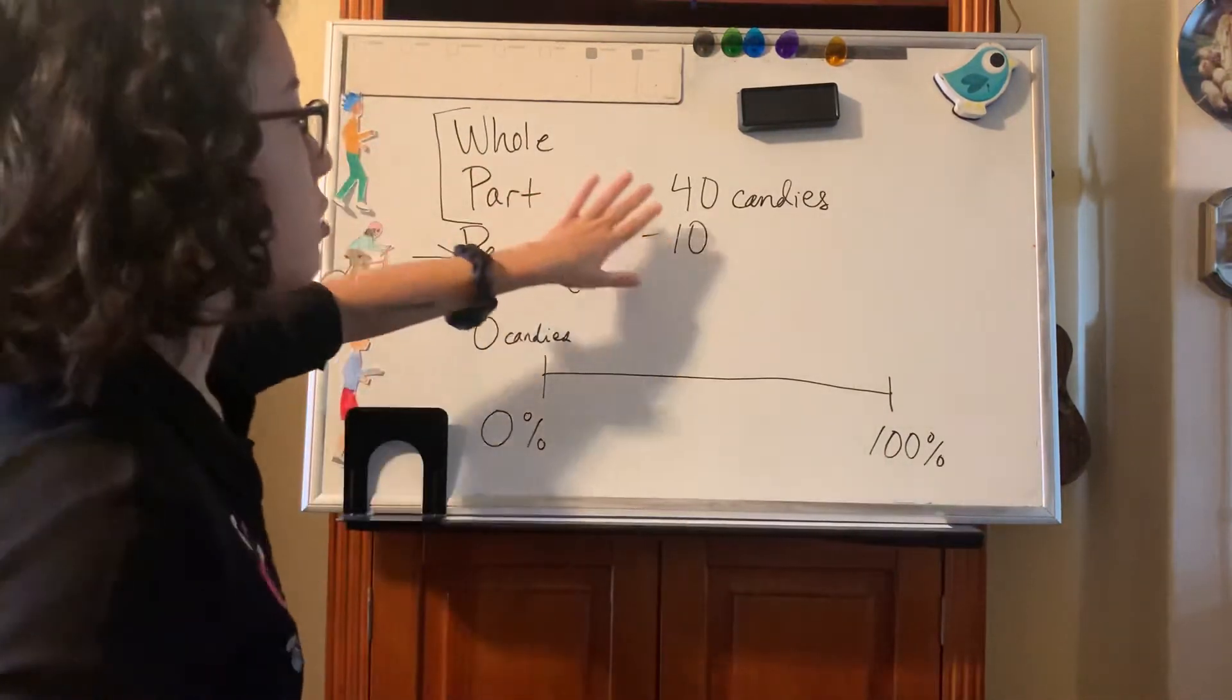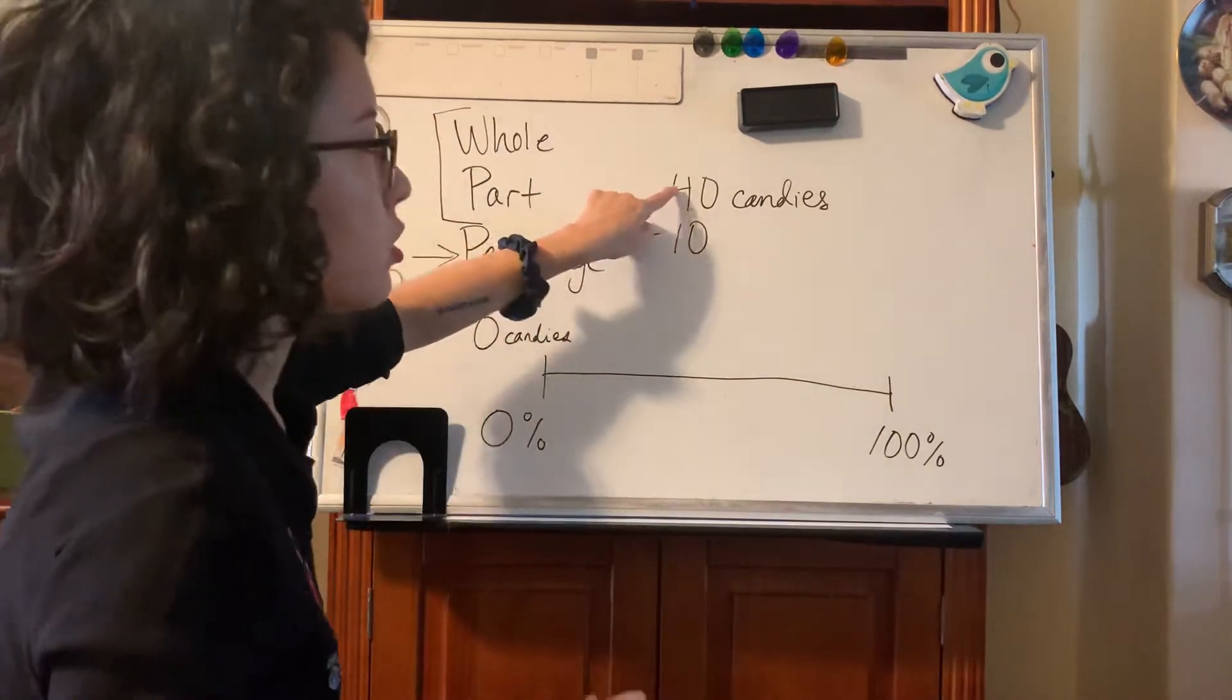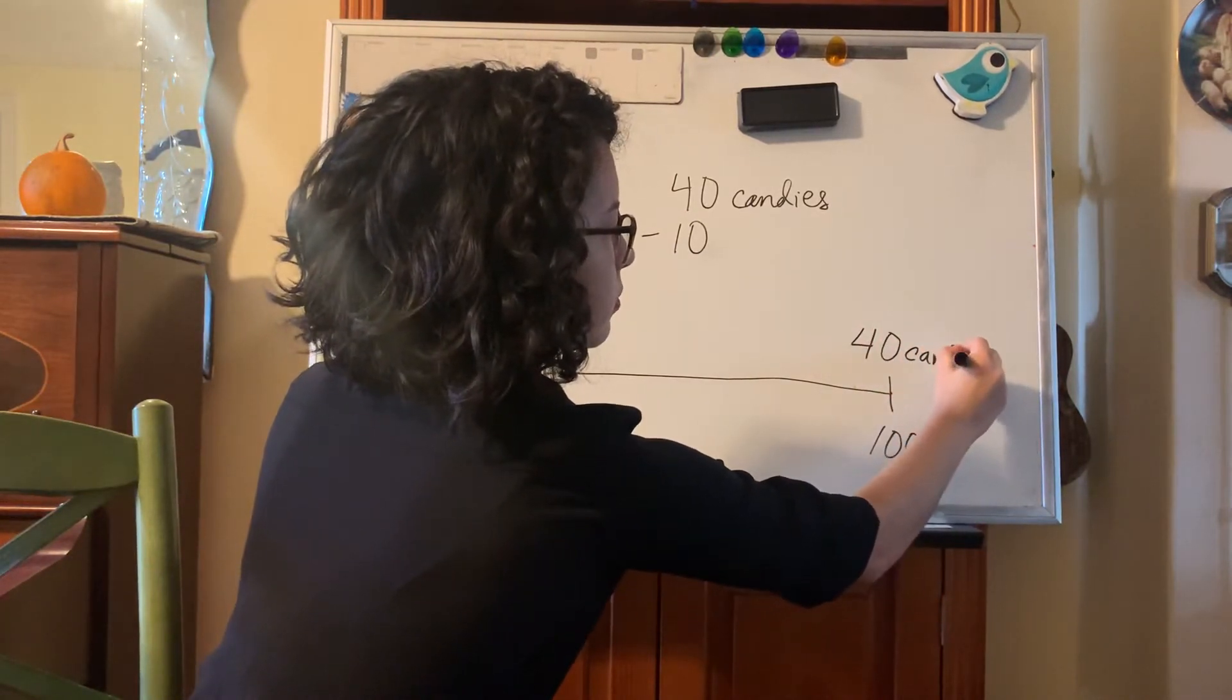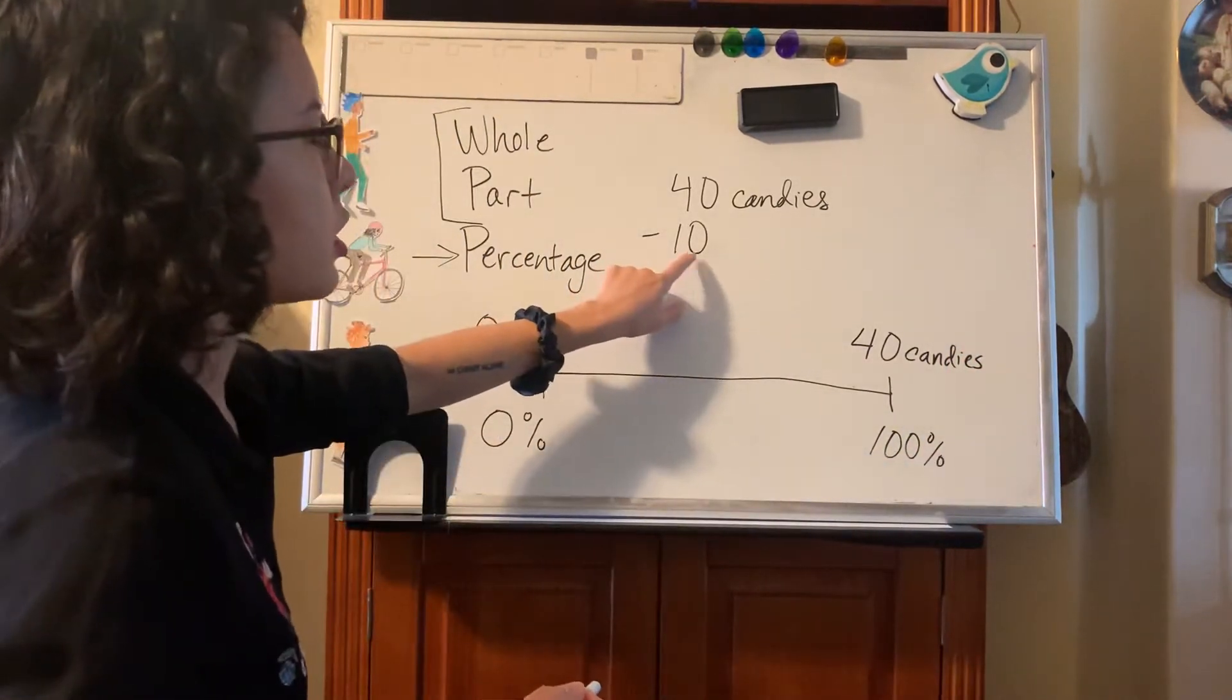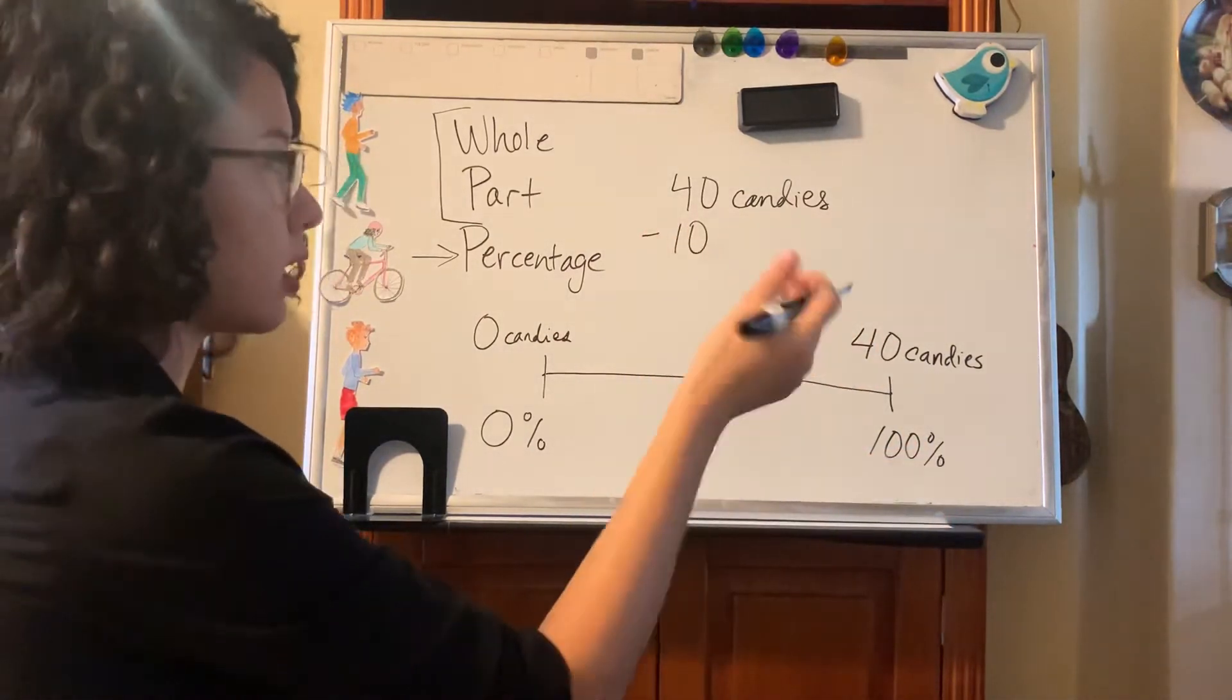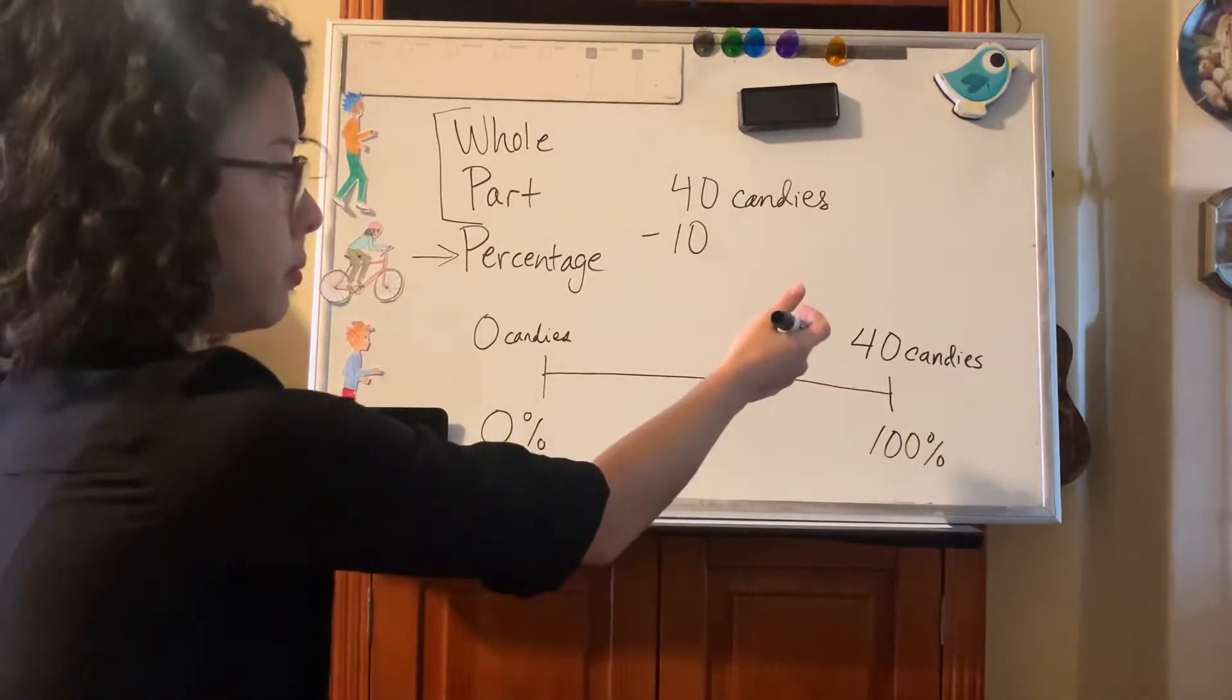And if you look at this problem, they also give you the whole. So we're having a whole and part. The whole here is 40 candies. So we also know that at this end of the number line, we're going to have 40 candies. Now what do we do with this piece of information that she ate 10 of them? Well, we can break up this double number line into pieces that show 10 at a time.